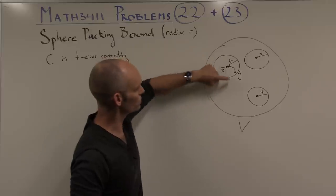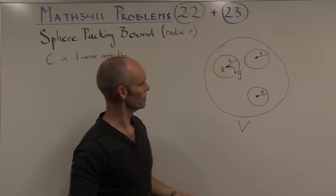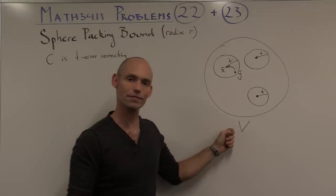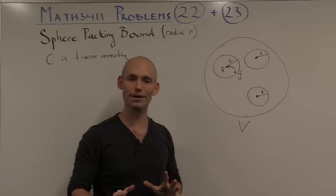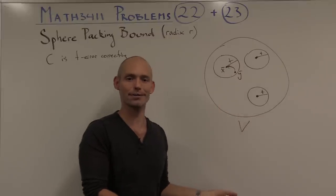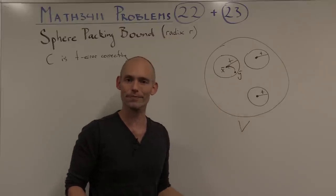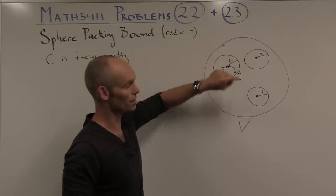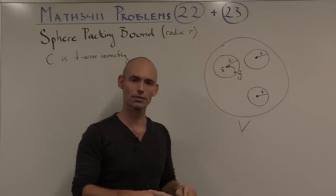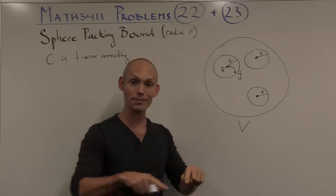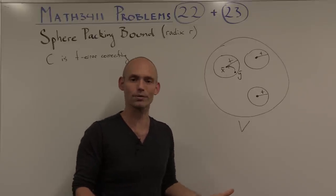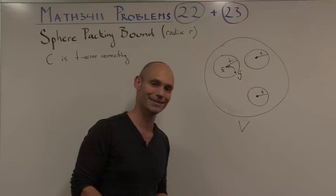This picture gives us a very simple but really important observation, namely that all the words within the spheres, if we count them, then that number is less than or equal to the total number of words. The reason for that is that the spheres can't overlap. If they overlapped, then the error correcting property would disappear.